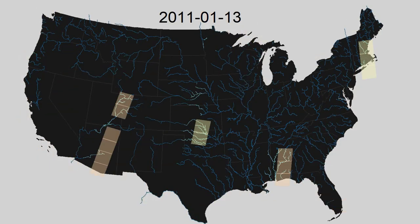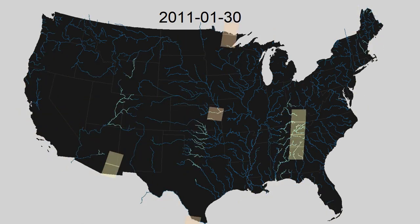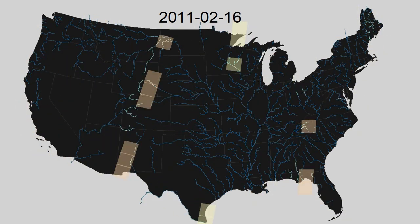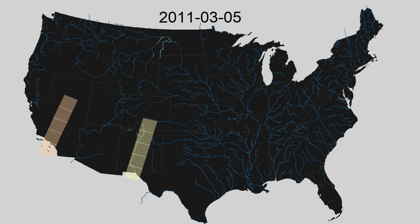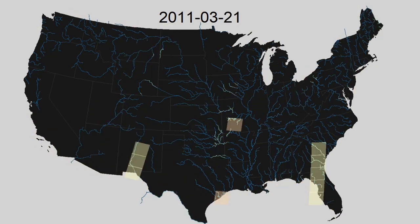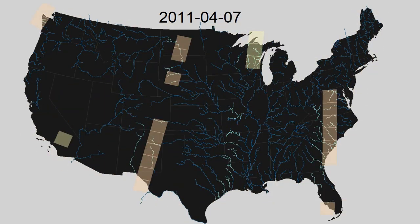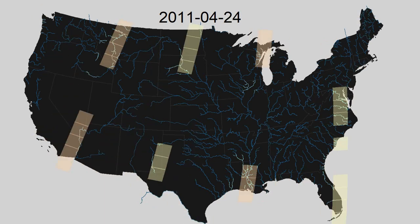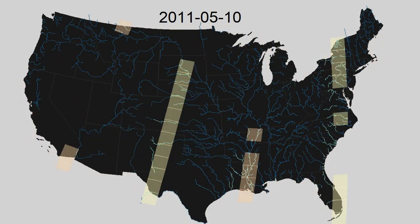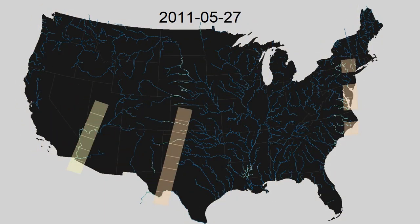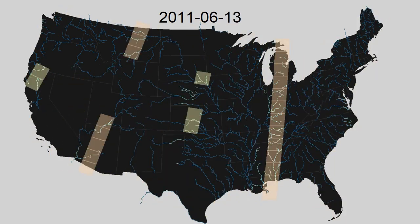This video shows Landsat satellites — 5 in red and 7 in yellow — taking pictures of rivers in the continental USA in 2011. Every time a cloud-free satellite image is taken, the rivers in the image light up. These images can be used to predict vital water quality information like algae biomass or dissolved carbon content.